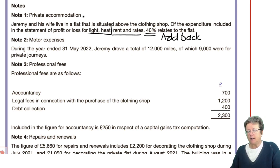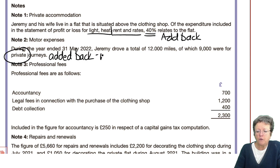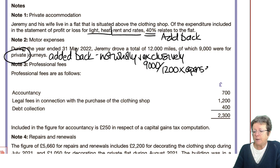Motor expenses: during the year he drove 12,000 miles, 9,000 of which are private expenses and need to be added back, because it's private — it's not wholly and exclusively for the business. So 9,000 of those 12,000 miles times the expense needs to be added back.